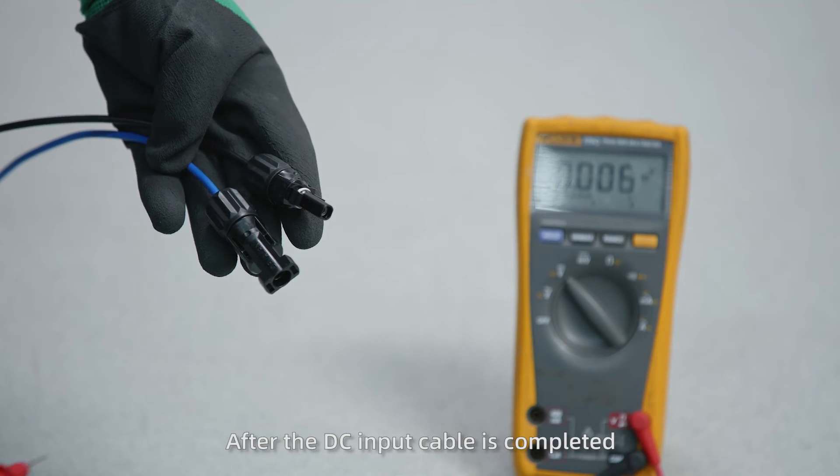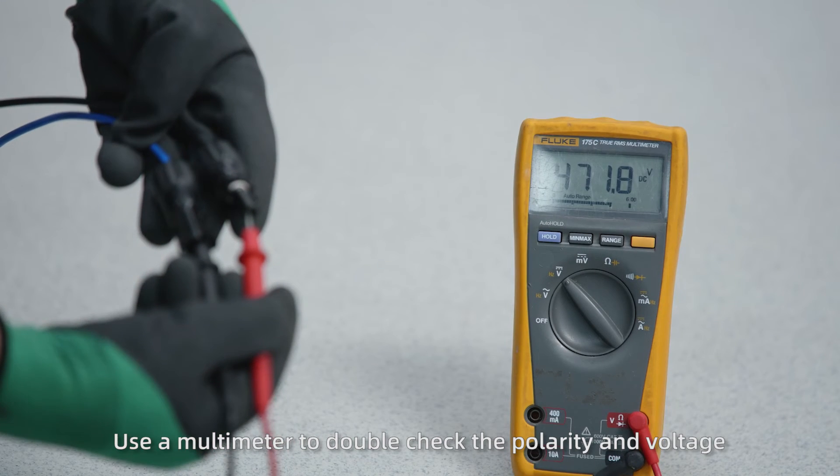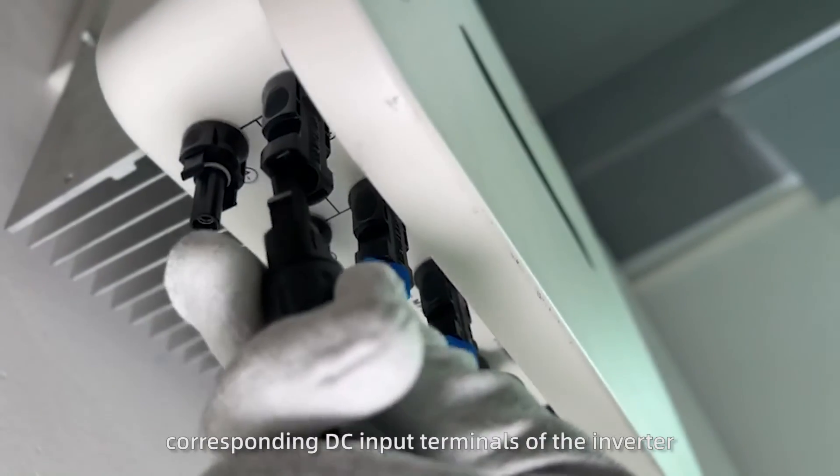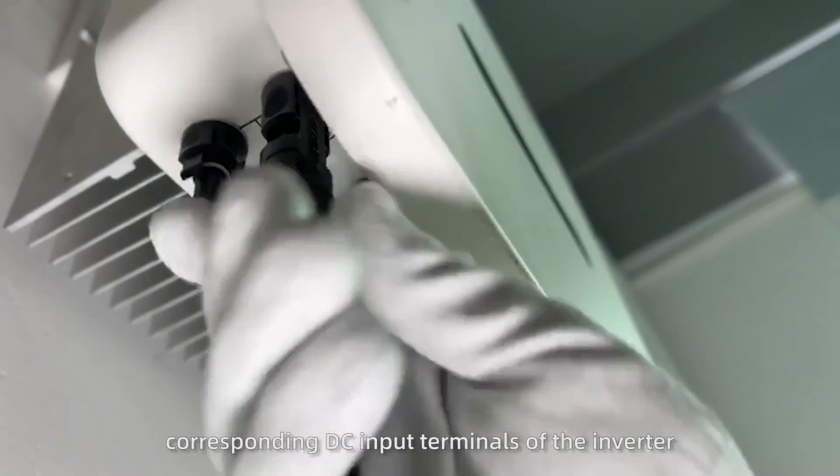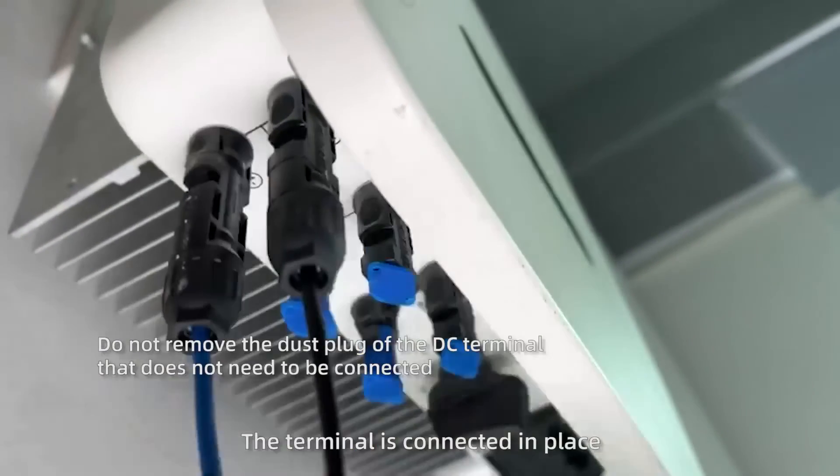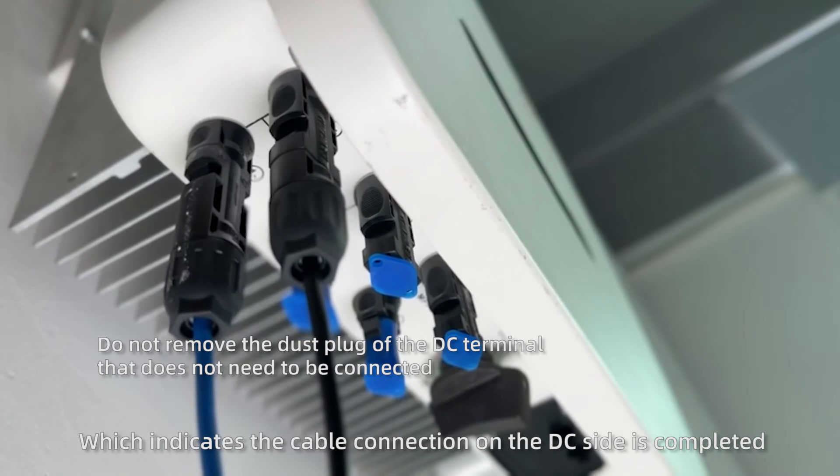After the DC input cable is completed, use a multimeter to double check the polarity and voltage. Then insert the positive and negative connectors into the corresponding DC input terminals of the inverter. When you hear a click sound, the terminal is connected in place, which indicates the cable connection on the DC side is completed.